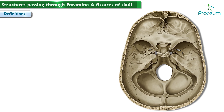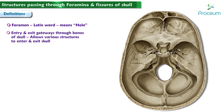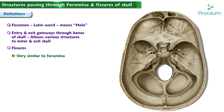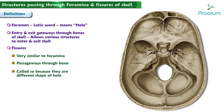Foramen is a Latin word for a hole. Essentially, all of the foramina in the skull are holes. They are entry and exit gateways through the bones of the skull that allow various structures to enter and exit the skull. Fissures of the skull are very similar to foramina in that they are also passageways through the bone.